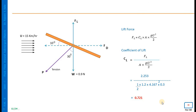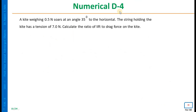In the previous numericals we found CD and CL; in Numerical 3 we found CL based on drag force and then the tension in the string. Numerical 4: A kite weighing 0.5 N soars at an angle of 35 degrees to the horizontal. The string holding the kite has a tension of 7 N. Calculate the ratio of lift to drag force on the kite.